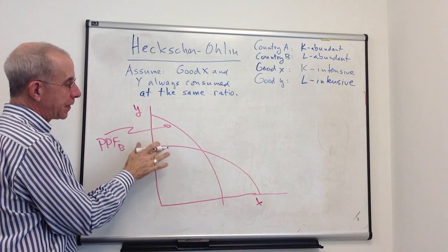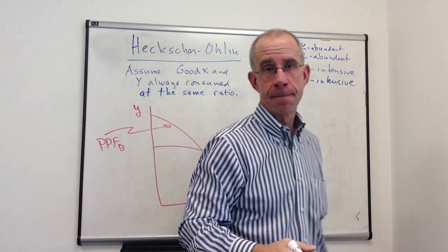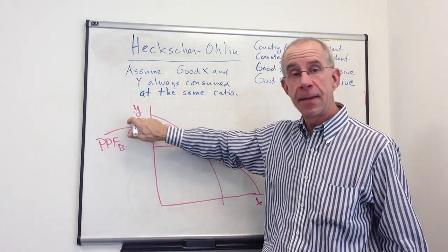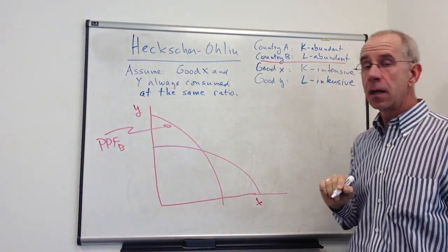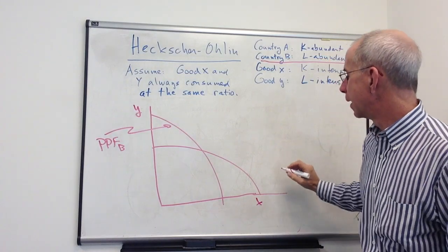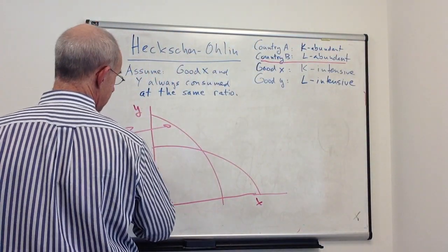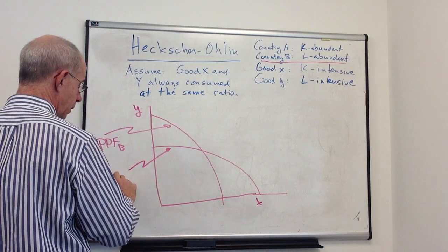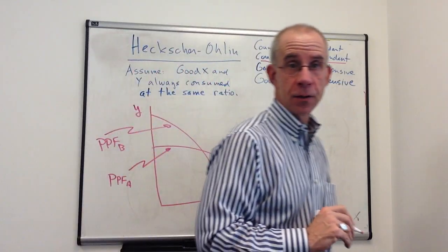So the PPF that's skewed out towards the Y-axis, that's bowed out in this direction towards the labor intensive good, is going to be the labor abundant country. And the other one that's skewed out more towards the capital intensive good is the PPF for country A.